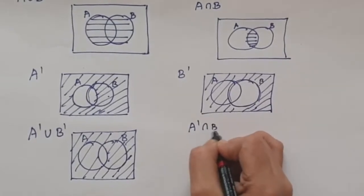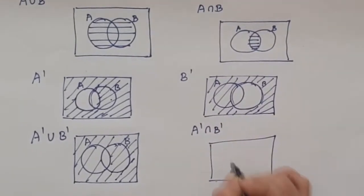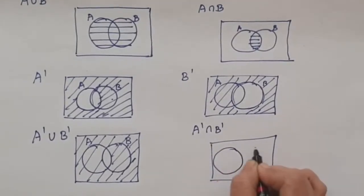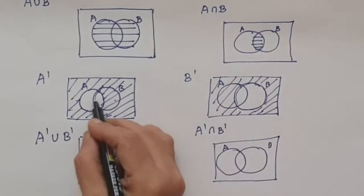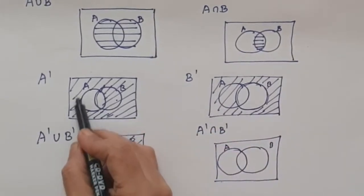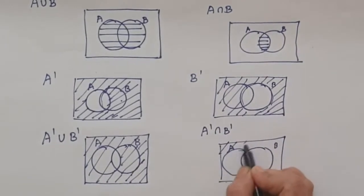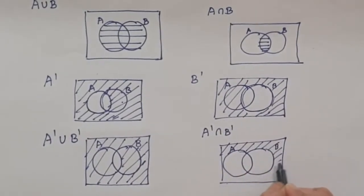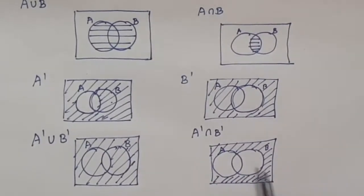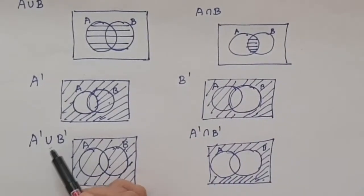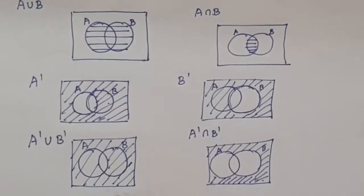In the same way, suppose if it is A complement intersection B complement, that means wherever there is a common region for both the figures, we need to check where both figures have in common. The outside part is shaded in both figures. So A complement intersection B complement will be the outside region. When you have these combinations, it is always better to draw a separate diagram and then do it — that makes the work easy.